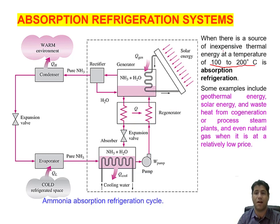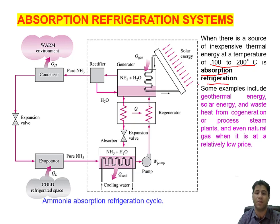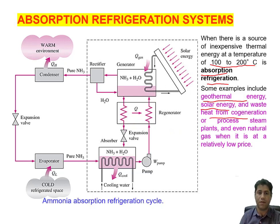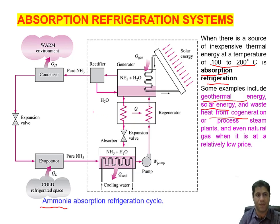If we have a source of inexpensive thermal energy at a temperature of 100 to 200 degrees Celsius, this absorption refrigeration system can be used — like geothermal energy, solar energy, waste heat from co-generation, and so on. Usually, we use ammonia as the working fluid in this cycle.